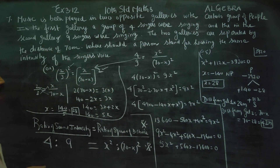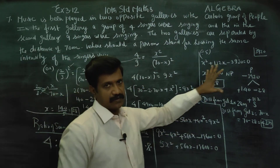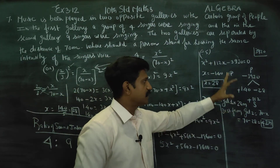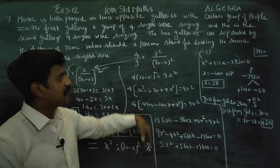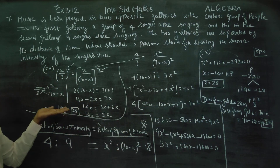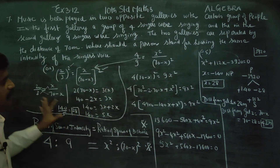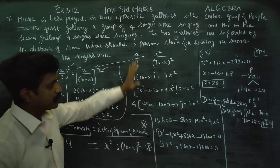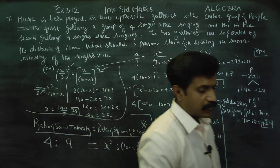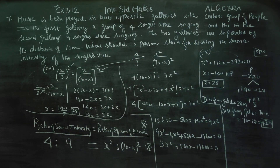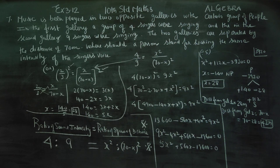There are two methods. Always go for the quadratic method as the primary method. If you are not able to do the first model, you can do the second model. Thank you.